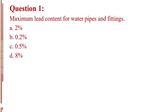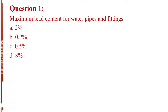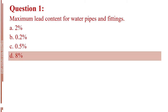Question number 1. Maximum lead content for water pipes and fittings. Letter A, 2%. Letter B, 0.2%. Letter C, 0.5%. Letter D, 8%. The answer is Letter D, 8%.